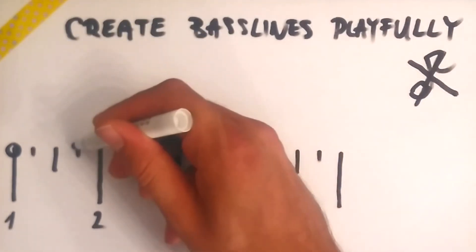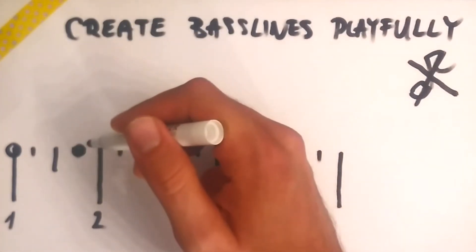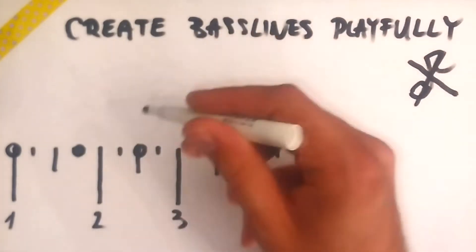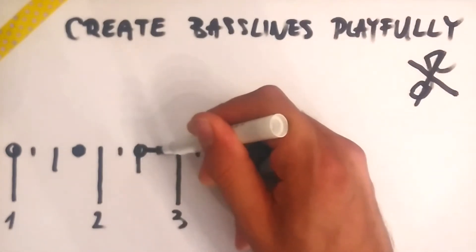Dots can be placed arbitrarily, thus creating new bass lines. If we want the note to be longer, we can visualize its length like this.